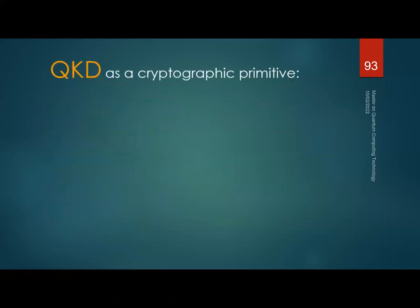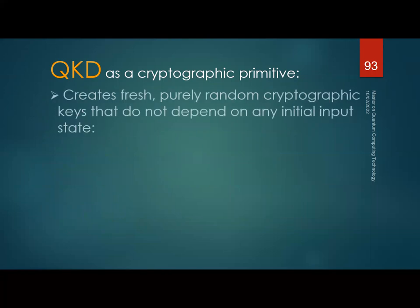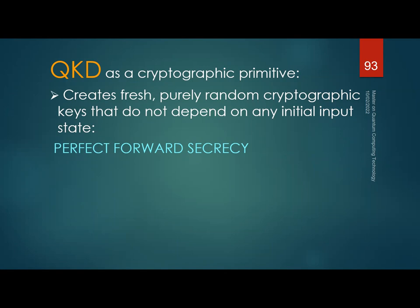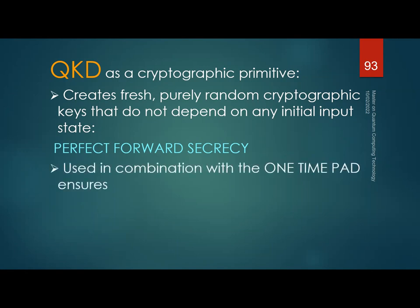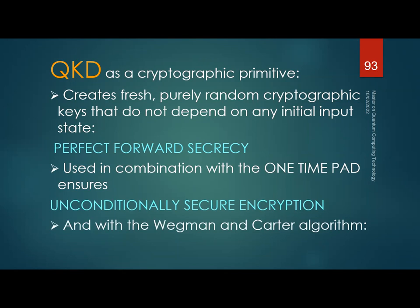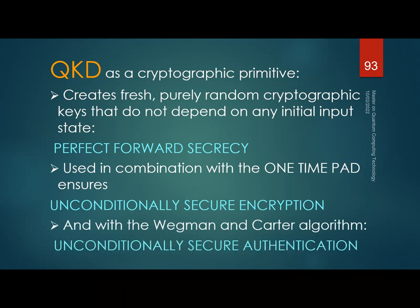QKD is a cryptographic primitive that gives unconditional security. It also creates fresh and purely random cryptographic keys that do not depend on an initial input state. This gives the property of perfect forward secrecy — if keys are compromised at any point, they reveal no information about past or future keys. Used in combination with the one-time pad algorithm, it ensures unconditionally secure encryption; with the Carter-Wegman algorithm, it gives unconditionally secure authentication.